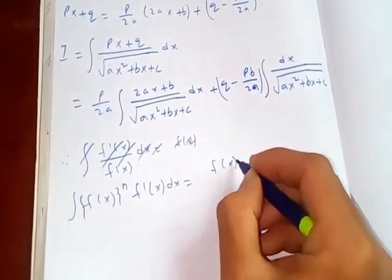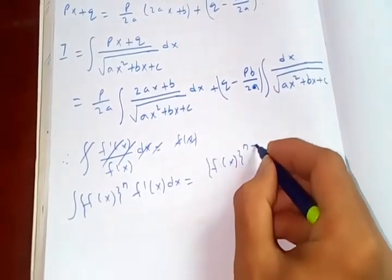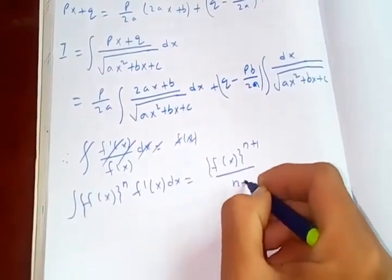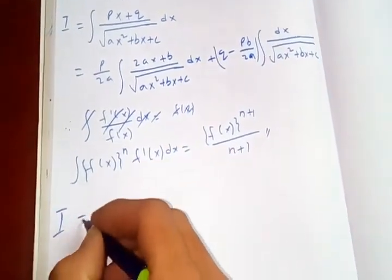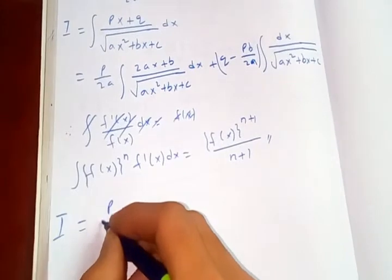This is nothing but f of x to the power n plus one over n plus one. This one I have derived already. So applying the same logic here,